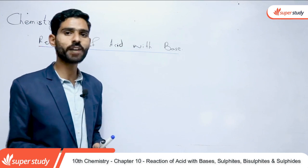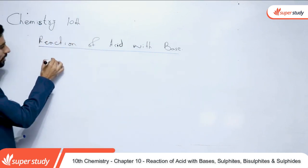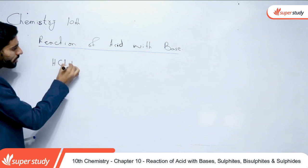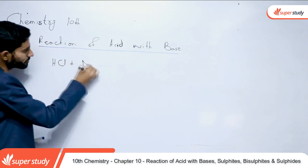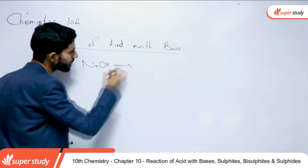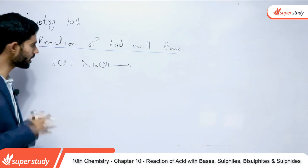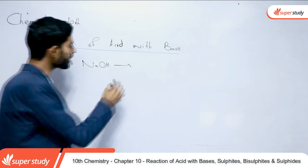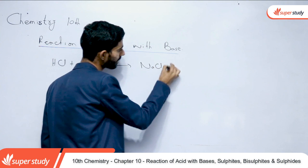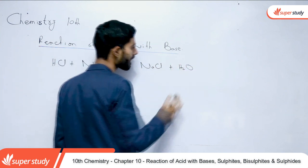We will go in the forward direction and see the reaction with an example. We have HCl — hydrochloric acid — and we will discuss its reaction with base, sodium hydroxide. The reaction produces NaCl, and the water formed is called H₂O.